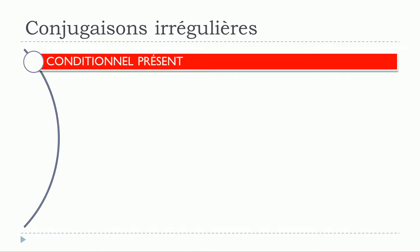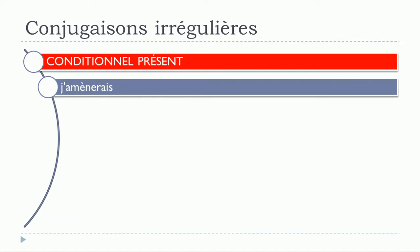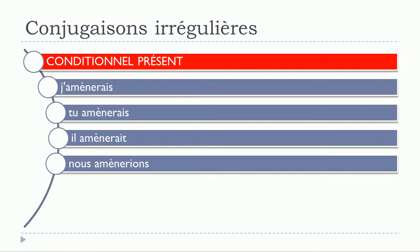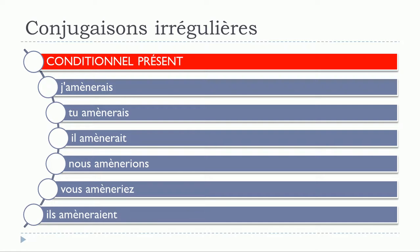Let's see now for the conditionnel présent: j'amènerais, tu amènerais, il amènerait, nous amènerions, vous amèneriez, ils amèneraient. It's exactly the same thing — the modification affects all the forms, and it is exactly the same modification as before: just put this accent grave on top of the 'e' — amènerais, amènerions, amèneriez, amèneraient.